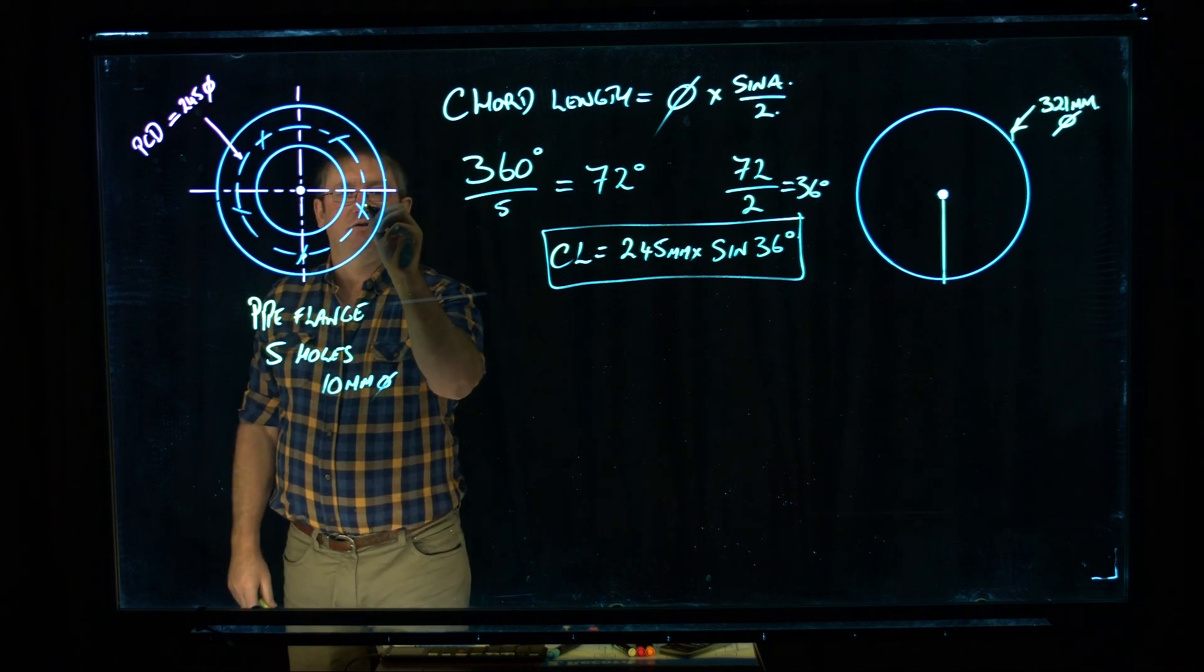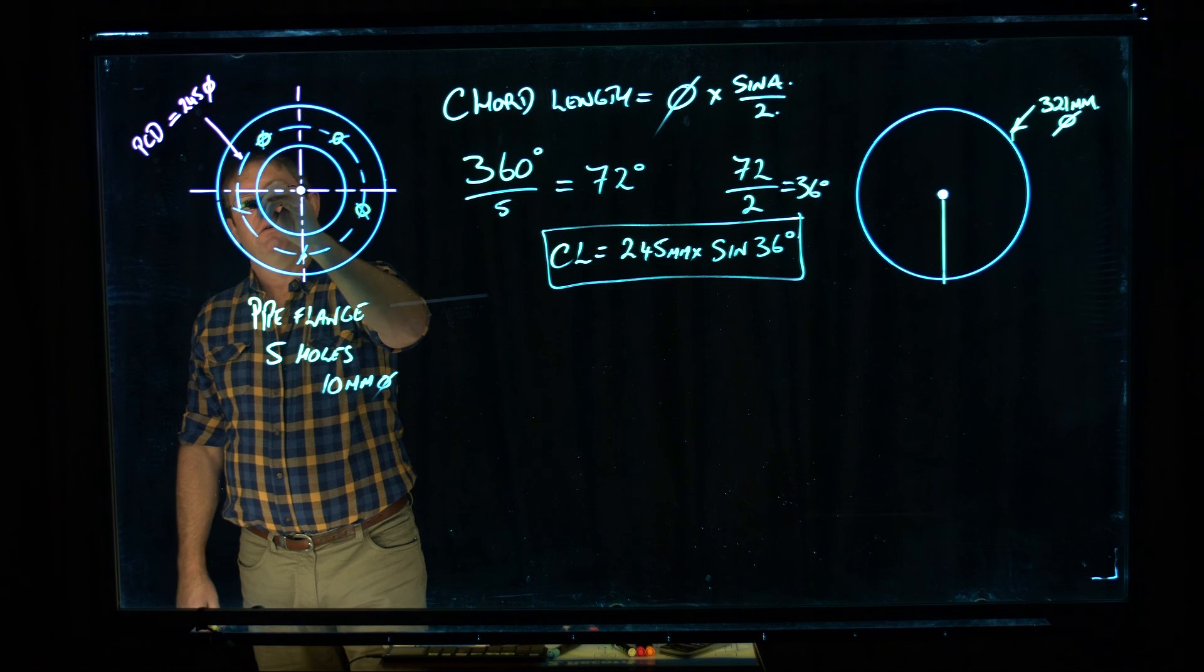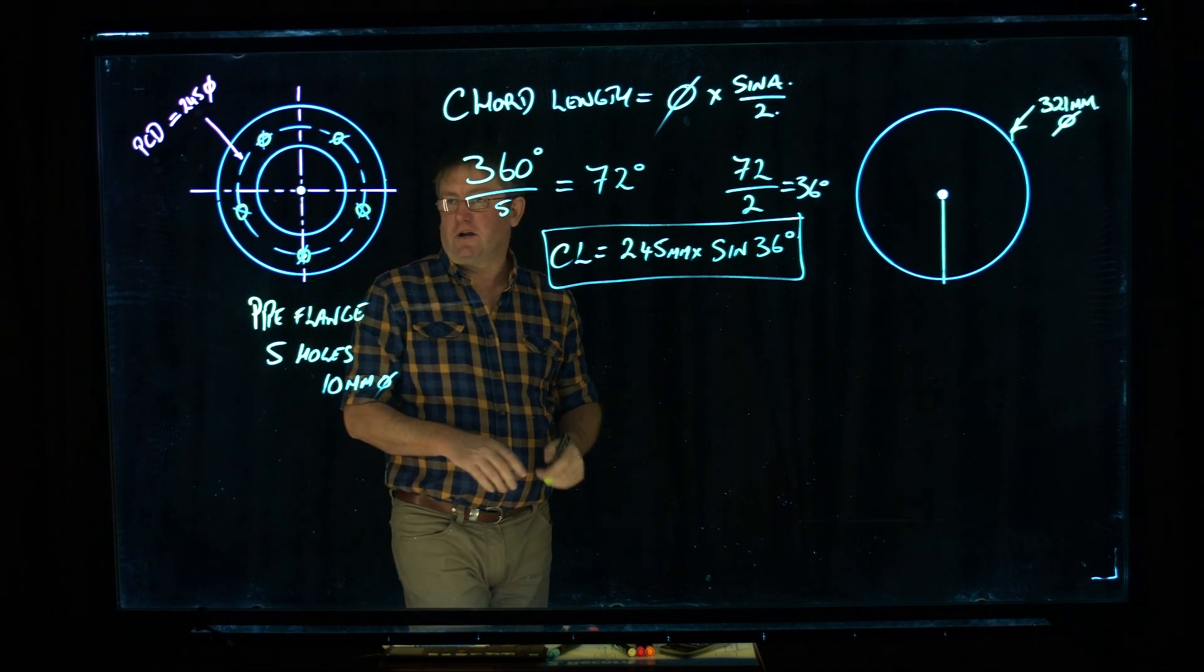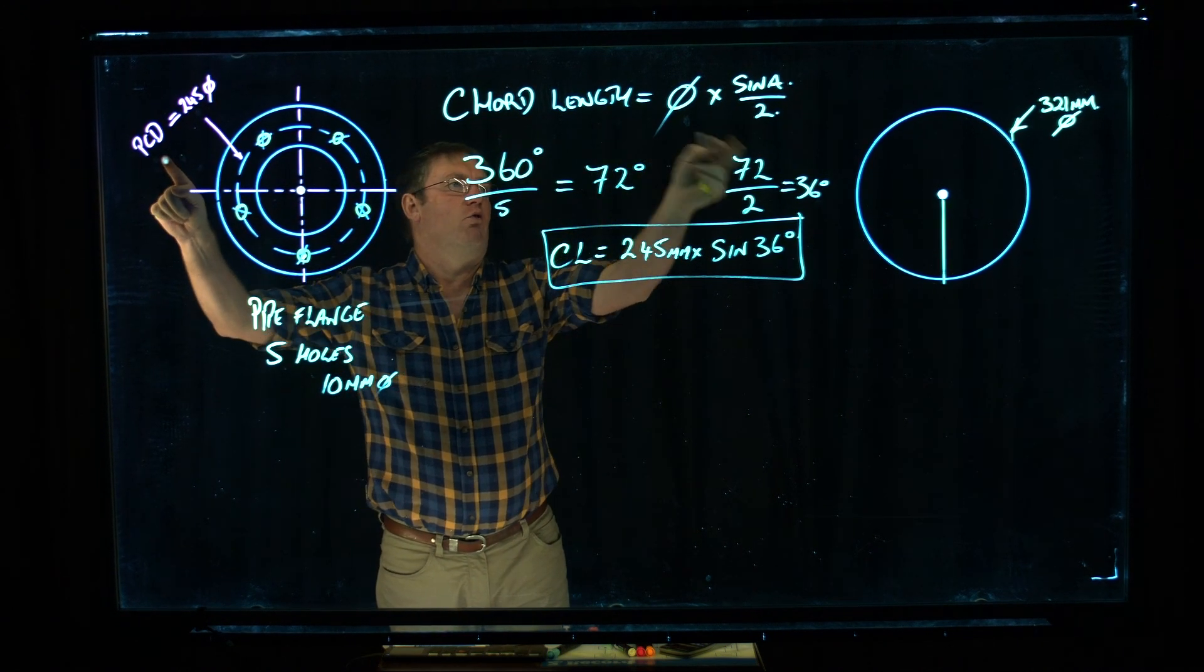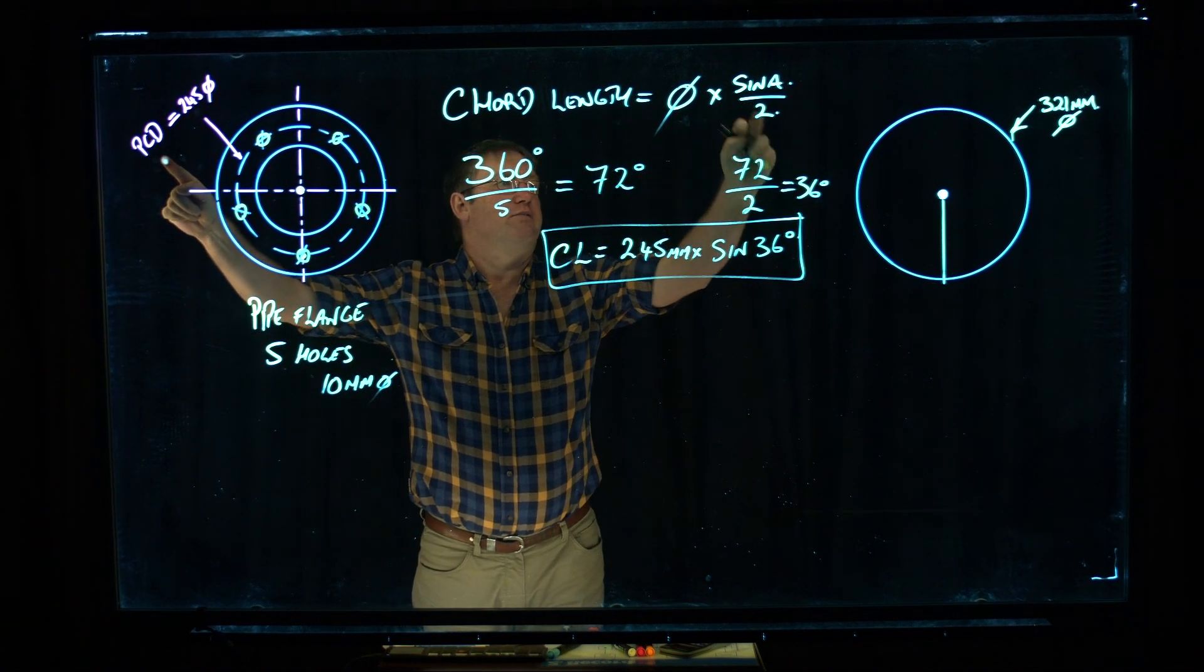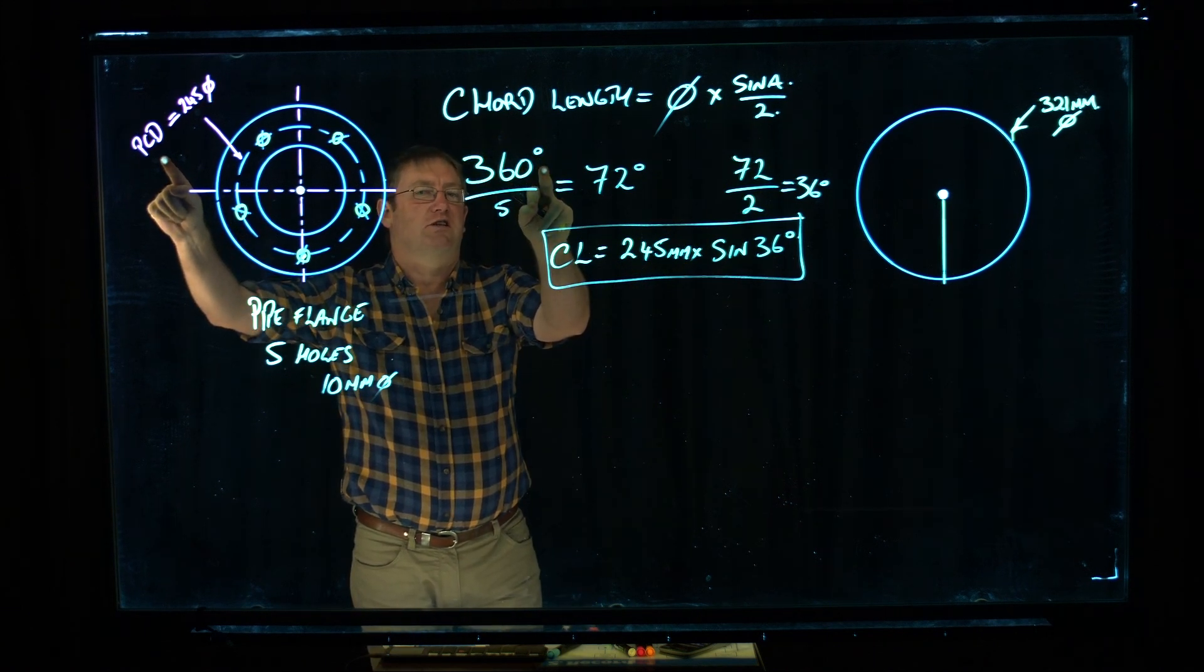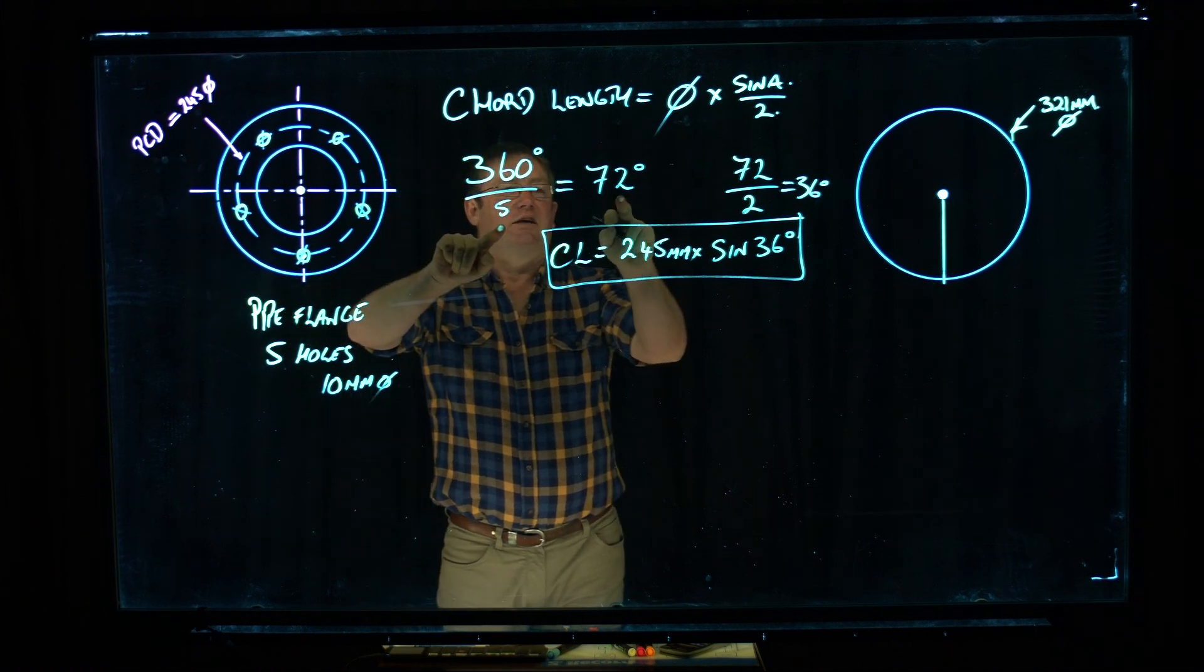And it comes back to the beginning. So there's my five points around the circle. I can center punch those and go and drill my 10mm hole on the drill press. And that's how you can determine points on a PCD using the chord length formula of diameter times sine A over 2. You divide the circle of 360 degrees by how many points you want to have in it. That gives you an answer.